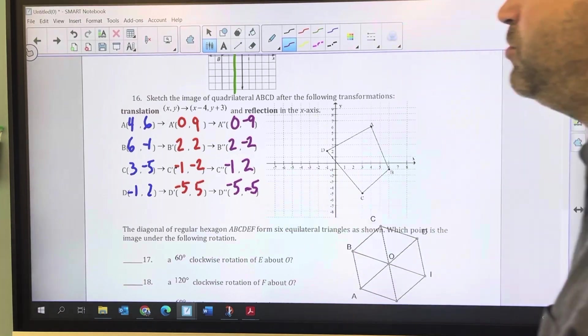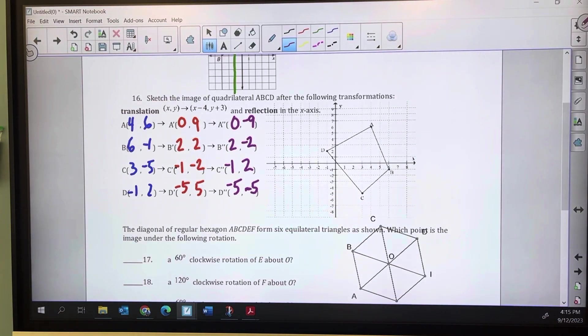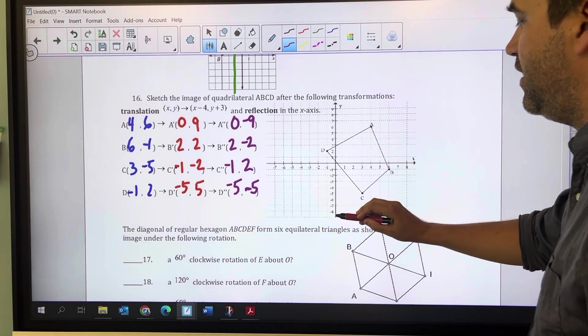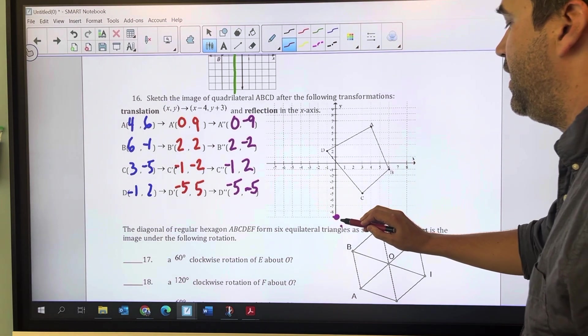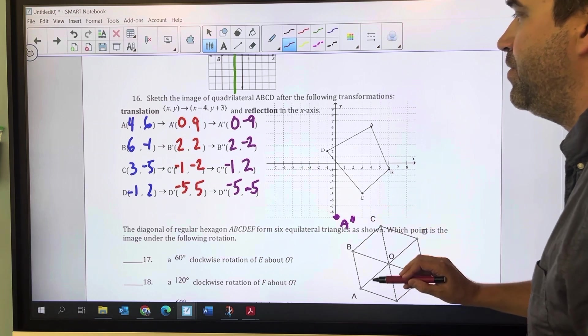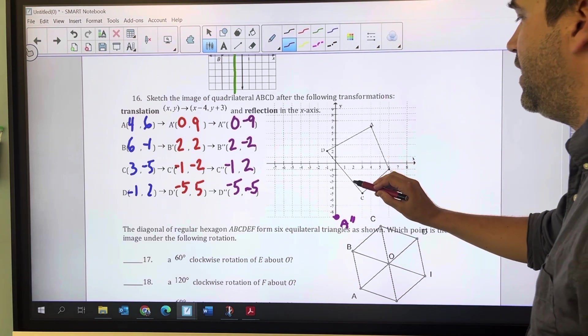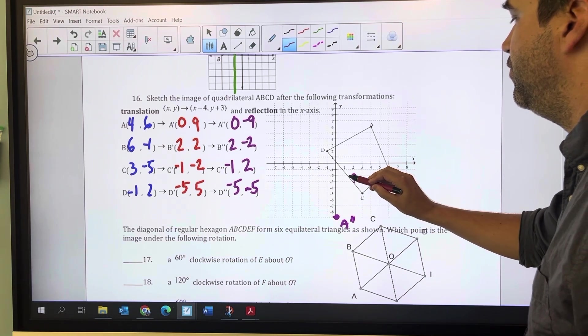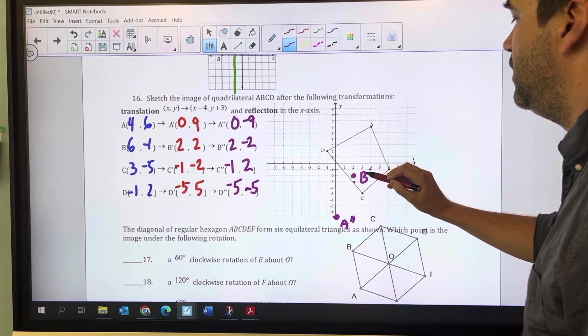That rule allows me to move quicker than sketching all the intermediate points. Now I can sketch the image after its transformation. I'm going to end up with (0,-9), and that's A double prime. Then (2,-2), that's B double prime.